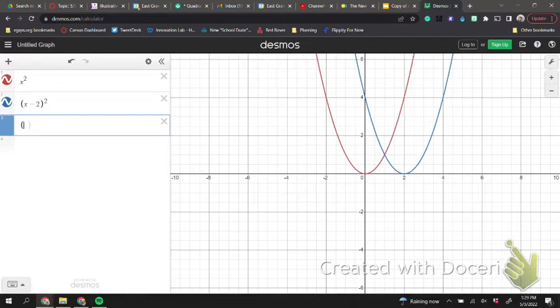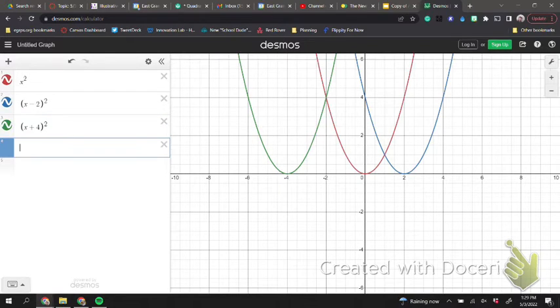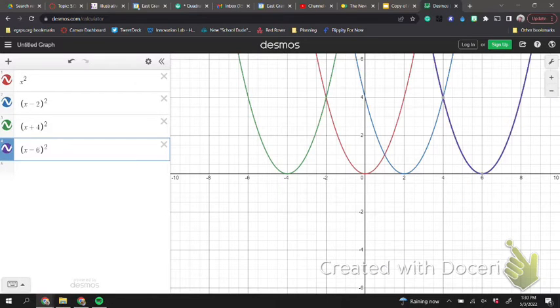So someone hit me with one they think will put my vertex at negative 4. Troy, x plus 4 squared. Someone hit me with one they think will put my vertex at 6. Elsa? Now let's talk about why this is working.